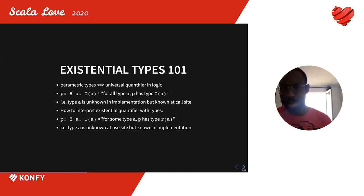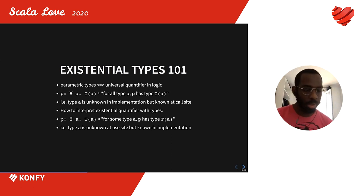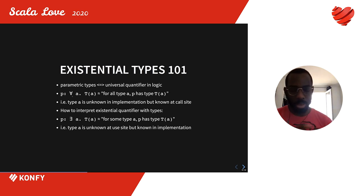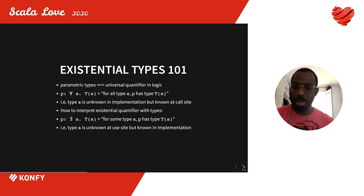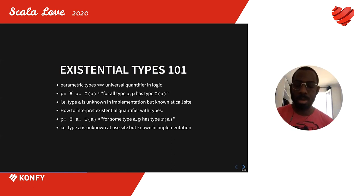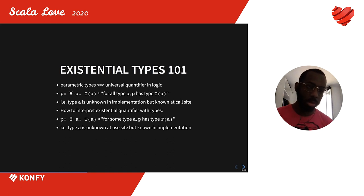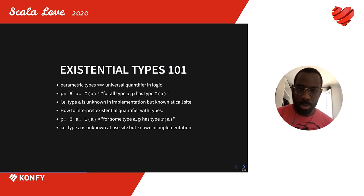Now I want to talk about existential types. Parametric types are very similar to universal quantification used in mathematics and logic. If I write something like 'for all type A, expression P has type C of A', this means the type A will be unknown in the implementation — the implementation is agnostic to A. Whereas when a user calls a function of that type, they must set the type A — it is only known at the call site.